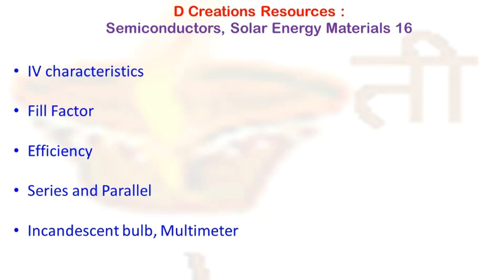From the IV curve, you will be able to find all the relevant parameters — ISC, VOC, maximum power point MPP, etc. In the laboratory, you can also connect solar cells in series and observe what happens to voltage and current, or connect them in parallel. For example, when connected in series, the voltage increases — if each solar cell gives 0.5 V and you have three in series, together they give around 1.5 V, while the current remains the same. The situation reverses in a parallel connection.